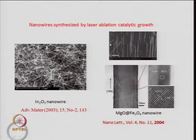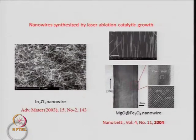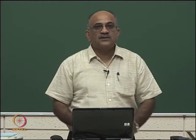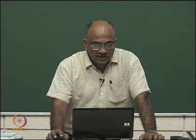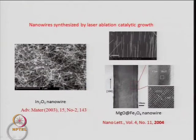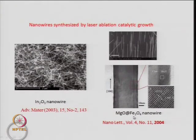Several types of nanowires can be grown by laser ablation, including indium oxide nanowires. This technique has no restriction to metallic nanowires — it can grow metallic, oxide, insulating, or semiconducting nanowires. The indium oxide nanowire shown is quite uniform.